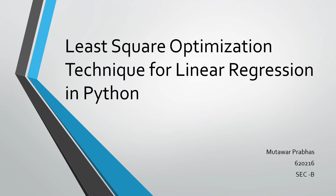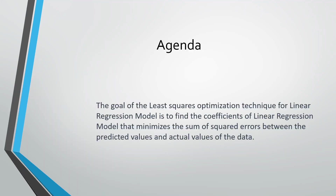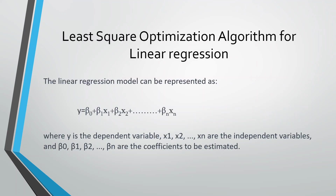Today I am going to explain about the implementation of linear regression technique in Python using the least square optimization technique. The agenda of my presentation is to use least square optimization to find the coefficients of linear regression in an optimized way so that it minimizes the sum of squared errors between the predicted values and the actual values of the data.